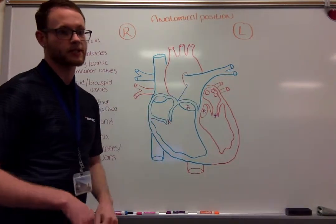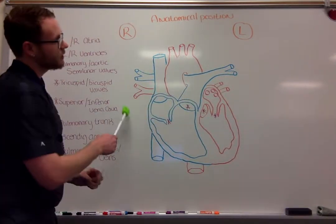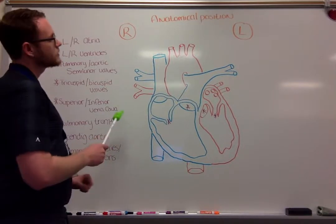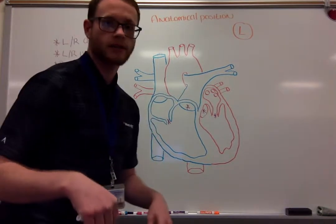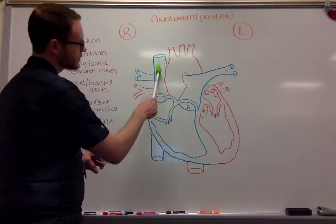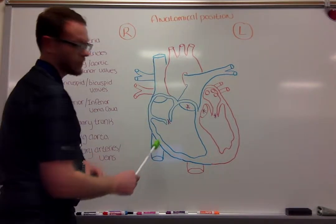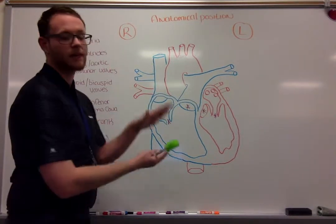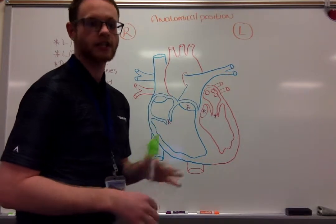Starting on our right side is where our deoxygenated blood goes into the heart, and it does this via the superior and inferior vena cava. This is blood that's coming back from systemic circulation.